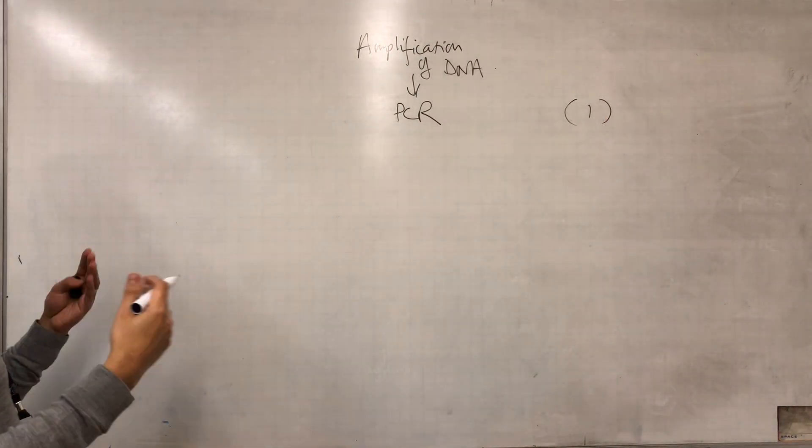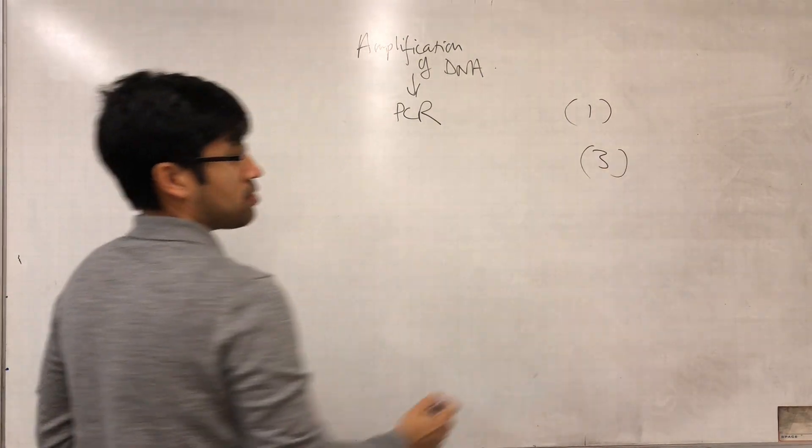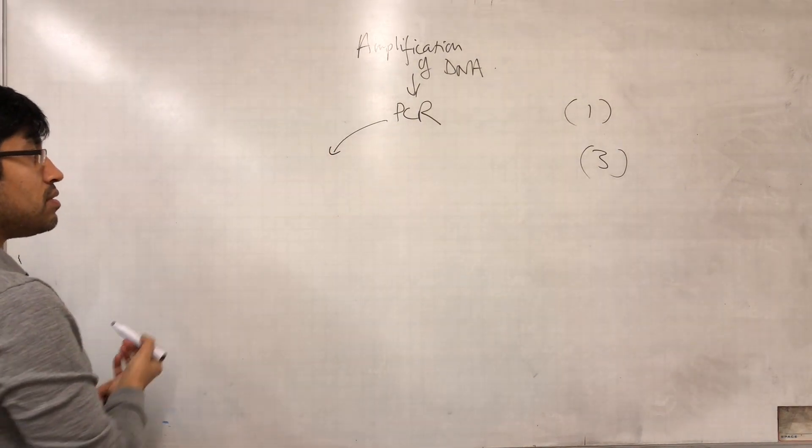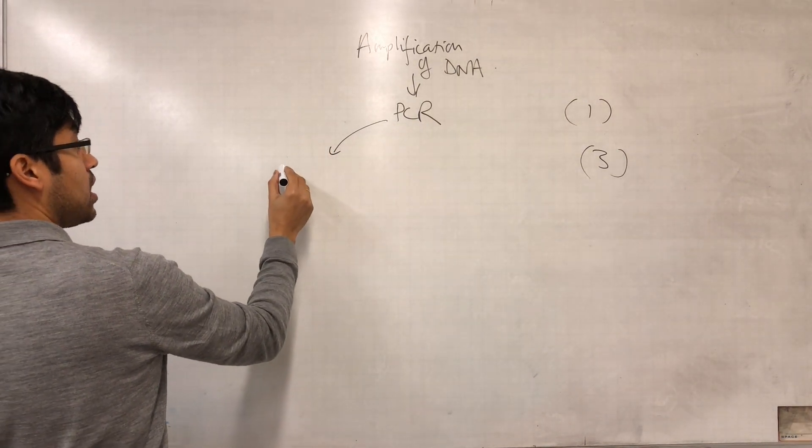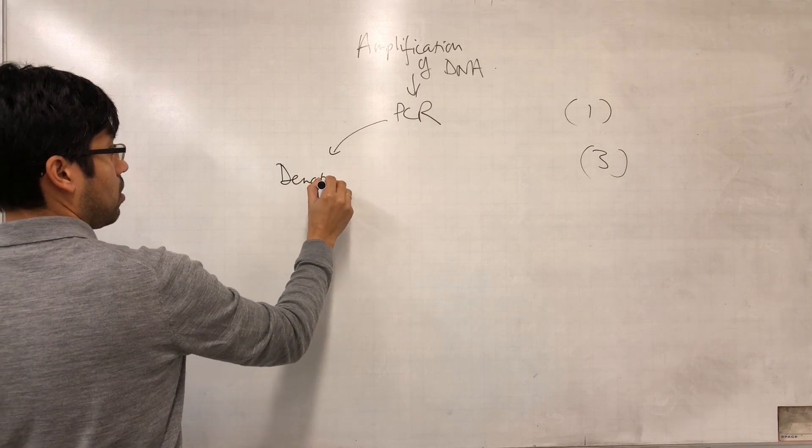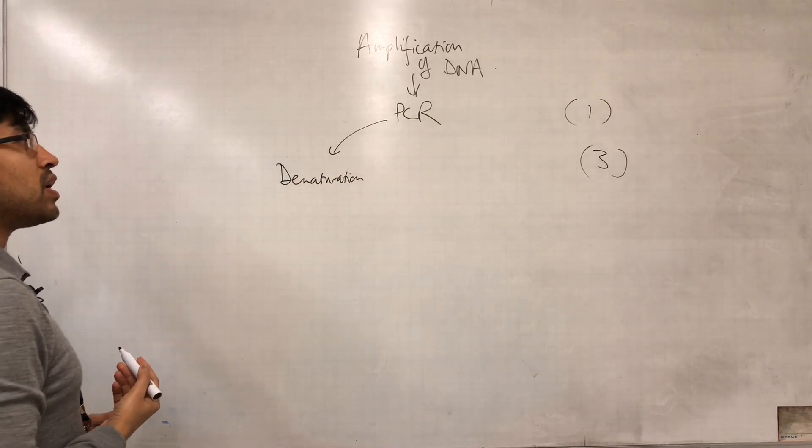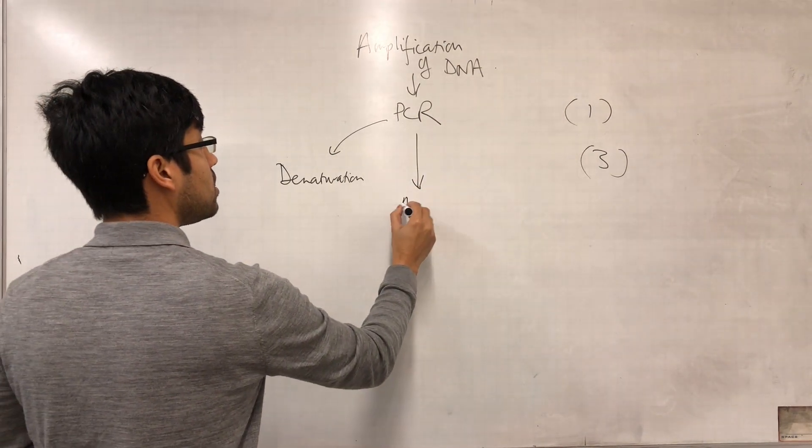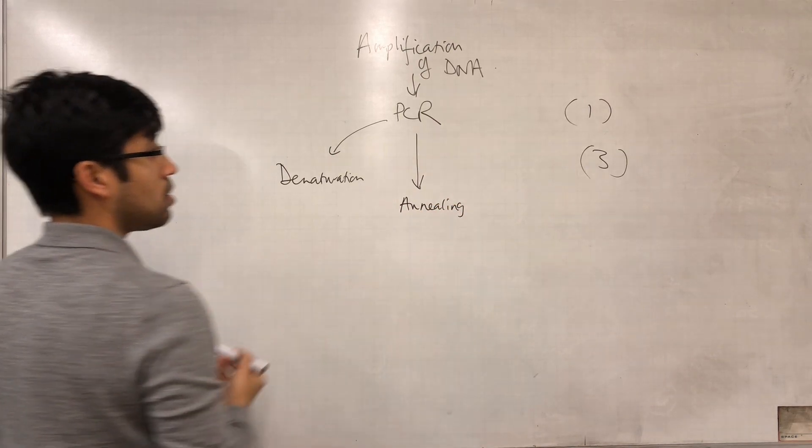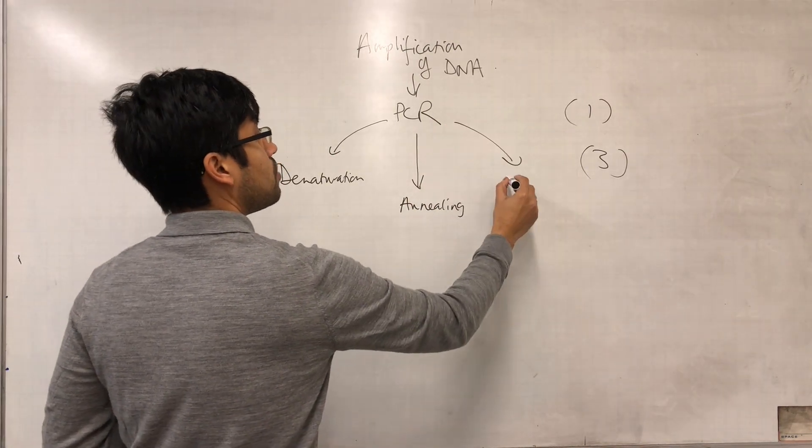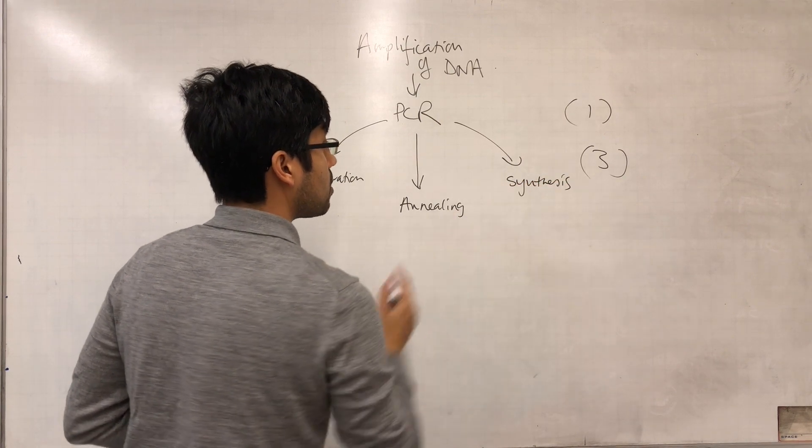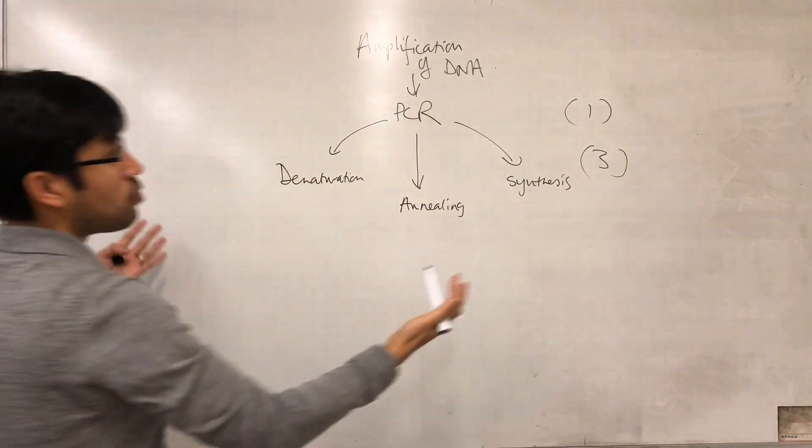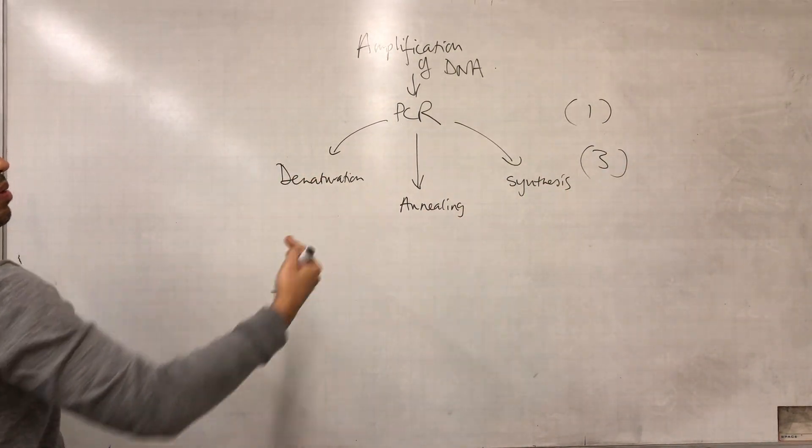But what if it's three marks? Well then we might talk about the three stages of PCR. We'll talk about the first stage of denaturation, the next stage which is the annealing step, and the third stage being the DNA synthesis step. So we have these three—if a question is asking us for three marks we might talk about that.